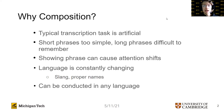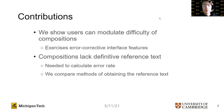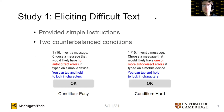An added bonus is that composition tasks can be conducted in any language. In our paper, we show that users can modulate the difficulty of their compositions based on simple instructions, and that their more difficult compositions exercise more error-corrective interface features. We also confront the problem that compositions lack a definitive reference text, which is needed to calculate error rate, and we compare three different methods of obtaining this reference text.